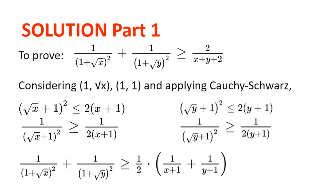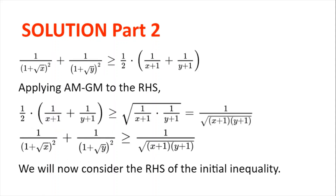Combining these two inequalities, we get 1 divided by (1 plus square root of x) squared plus 1 divided by (1 plus square root of y) squared is greater than or equal to one half multiplied by (1 divided by (x plus 1) plus 1 divided by (y plus 1)). Applying the AM-GM inequality to this, we get that expression is greater than or equal to 1 divided by the square root of (x plus 1)(y plus 1).